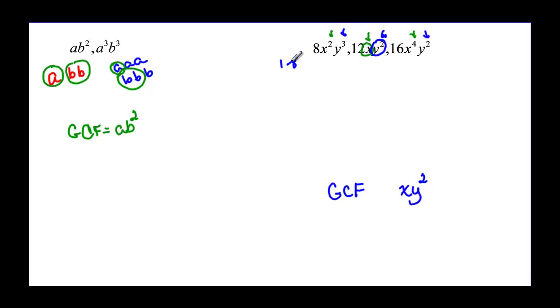So again we do 1 times 8, 2 times 4. That's all there are for factors of 8. 12 would be 1 times 12, and 2 times 6, and 3 times 4. And then 16 is going to be 1 times 16, 2 times 8, and 4 times 4. And it looks like 4 is going to be our greatest common factor that's common to all three, and the biggest thing that's common to all three. So our greatest common factor then would be equal to 4XY squared.